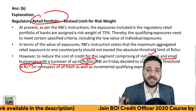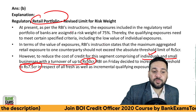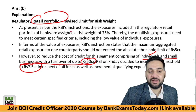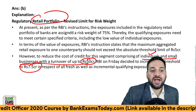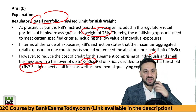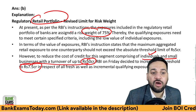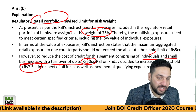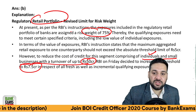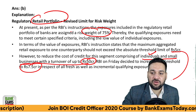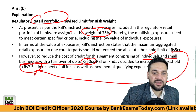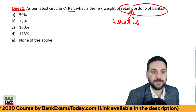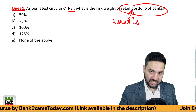As per the latest RBI circular, the risk weight on the retail portfolio has been assigned as 75 percent. The exposure limit used to be 5.5 crore but has now been raised to 7.5 crore, and the risk weight is 75 percent. These are two important points from the latest RBI circular regarding the retail portfolio.